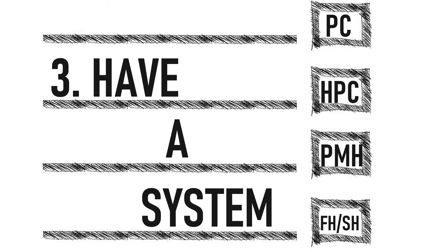Number 3: Have a system. In the ED, you want to take a structured and super-focused history. You want the relevant positives, but also the relevant negatives. Know your cardinal symptoms for each body system. We talk about pain a lot in the ED, so know how to get a good pain history — SOCRATES is a good starting acronym.